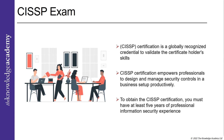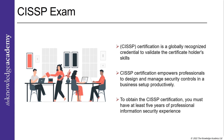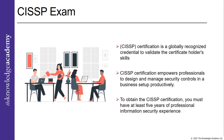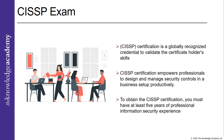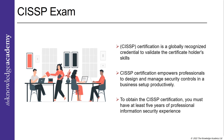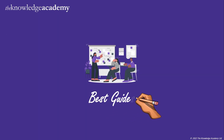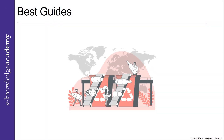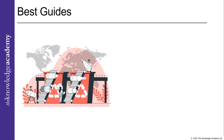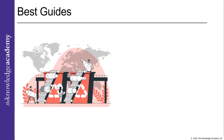To obtain the CISSP certification, you must have at least five years of professional information security experience and should be endorsed by another CISSP-certified professional. You can get a one-year waiver from the five-year experience requirement if you have a four-year degree or obtain ISC² approved credentials.